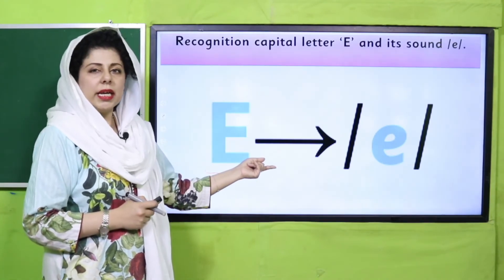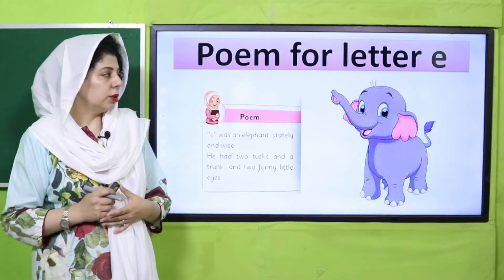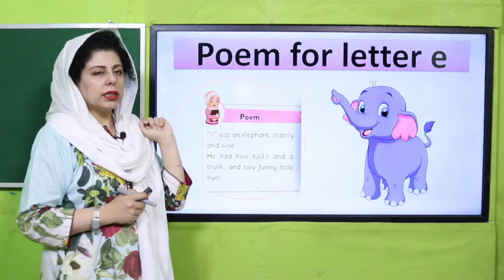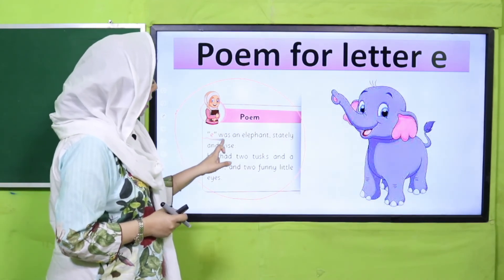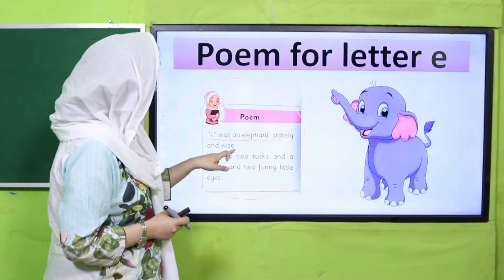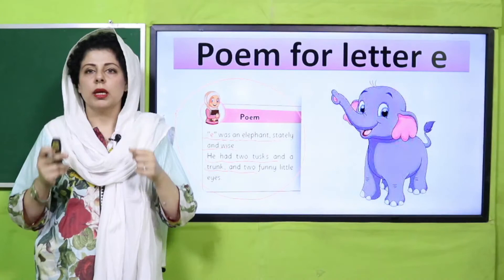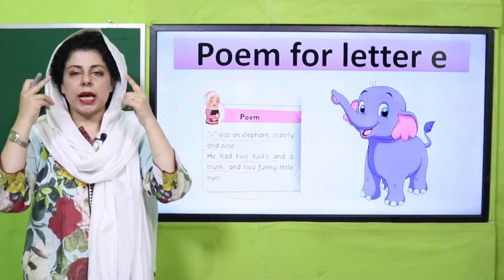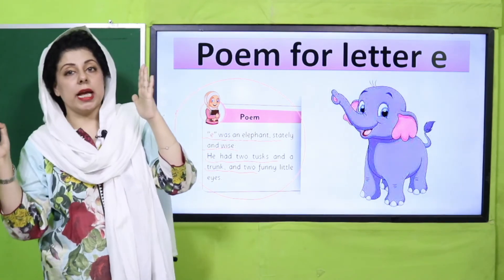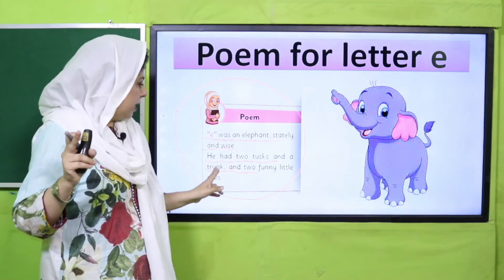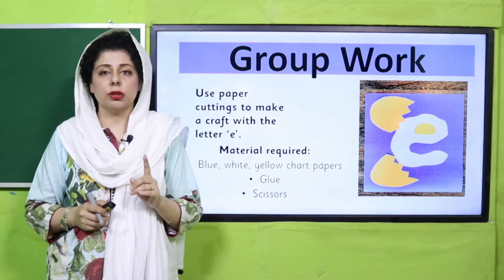This is the letter E — shabash. And this is its sound — eh. Very good. When your task is complete, we will sing a short poem with actions. Stand up quickly! This poem is about an elephant: 'E was an elephant, stately and wise, he had two tusks and a trunk, and two funny little eyes.' When singing a poem, point at the actions and objects. With actions, children sing, enjoy, and recognize the sound too.